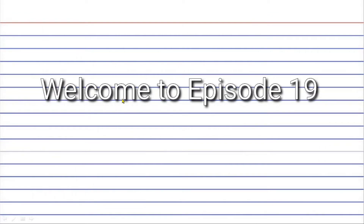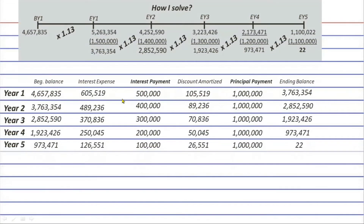Hi guys, welcome again to my channel. We are now on episode 19 of our current series. In this video we're going to talk about the amortization table — specifically how to use it to answer the seven possible measurement questions related to accounting for loans payable. Please see the previous episodes linked in the description below before continuing. If you've finished them, let's get started.